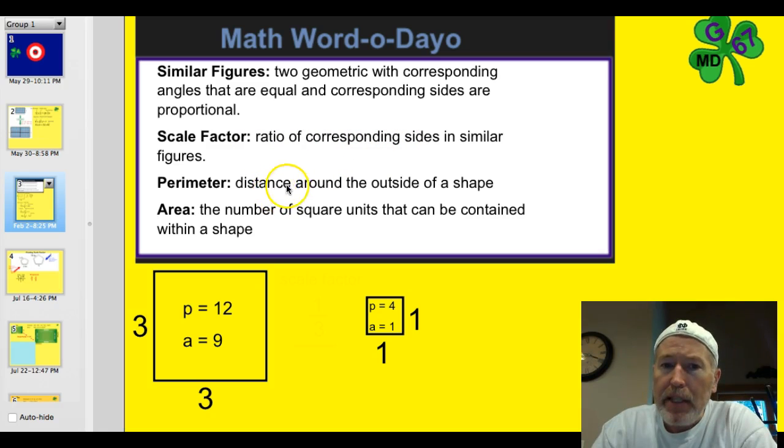The perimeter, that's the distance around the outside of the shape. And the area, of course, is the number of square units that can be contained within a shape. Let's go backwards. Before we went from a small to a large, let's take a look at a very simple sample. We're going from a larger shape down to a smaller shape. It's a reduction.